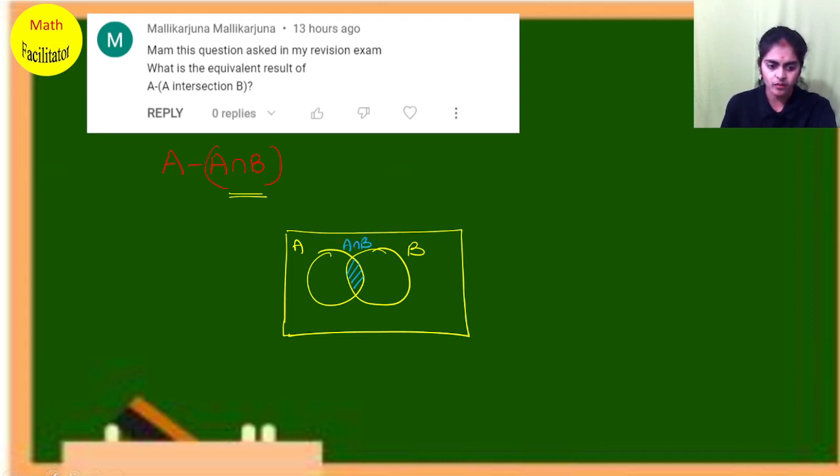Now suppose I want to find A minus A intersection B. A intersection B is this part. First, do you know what is A minus B?